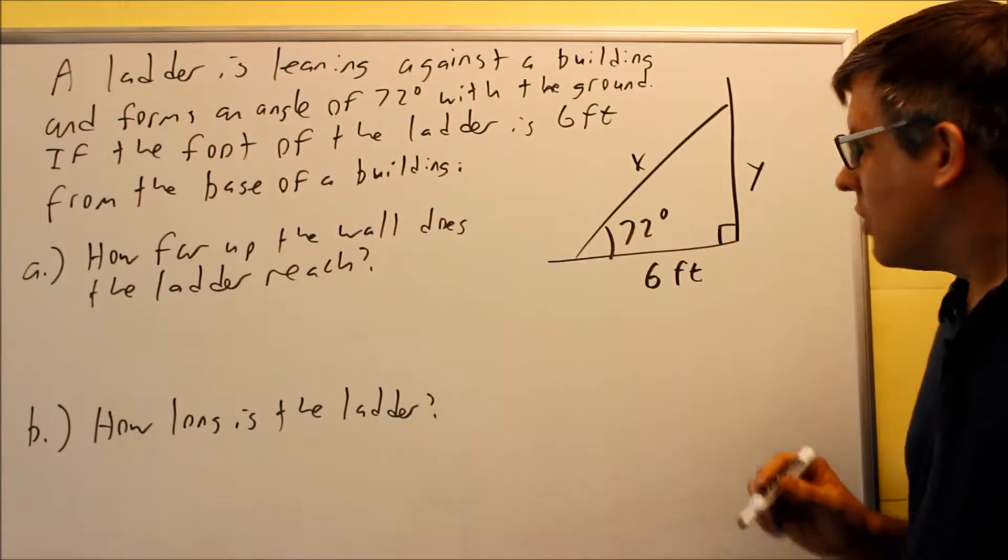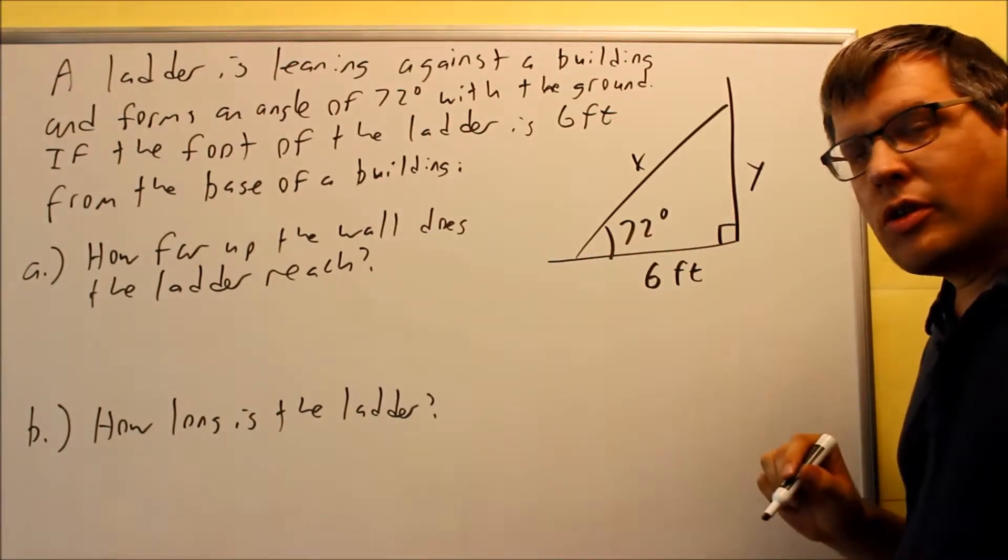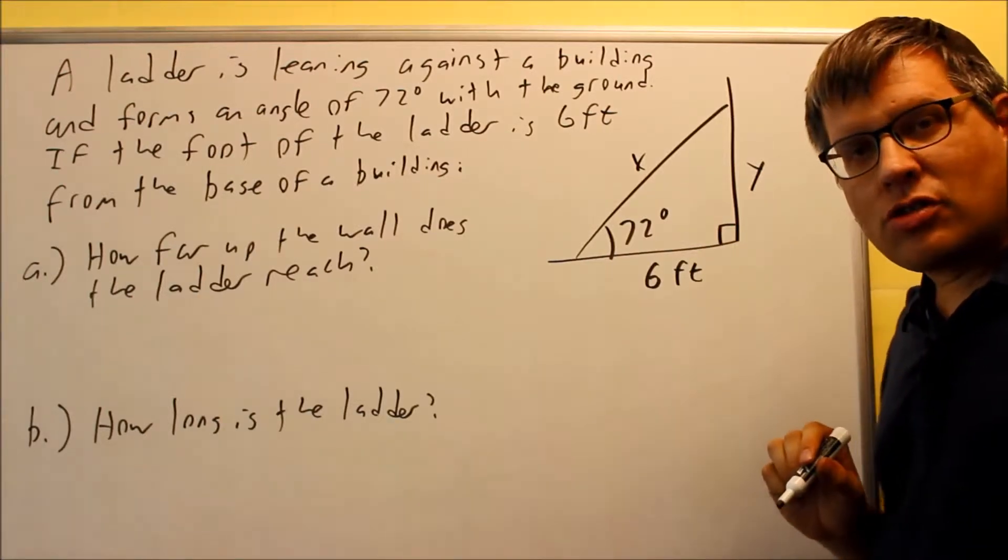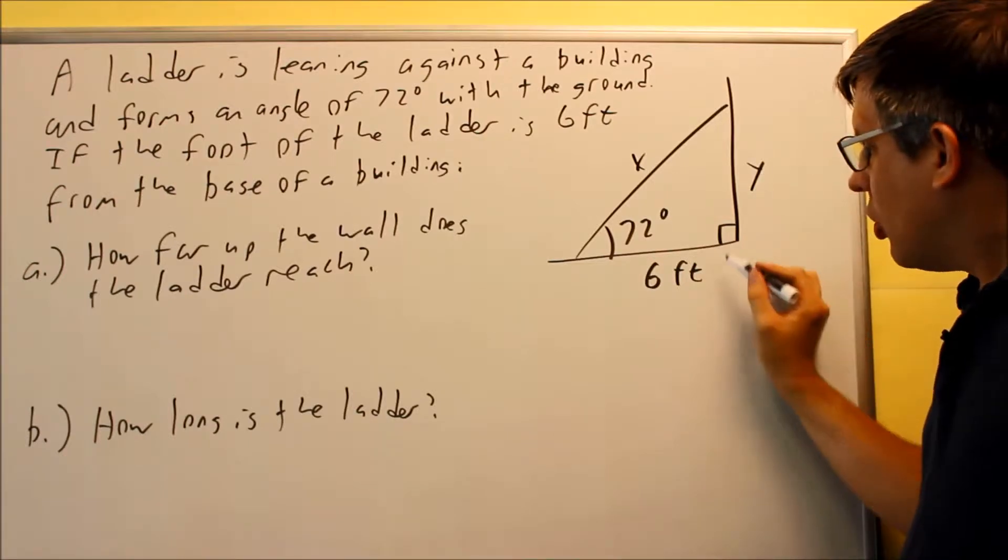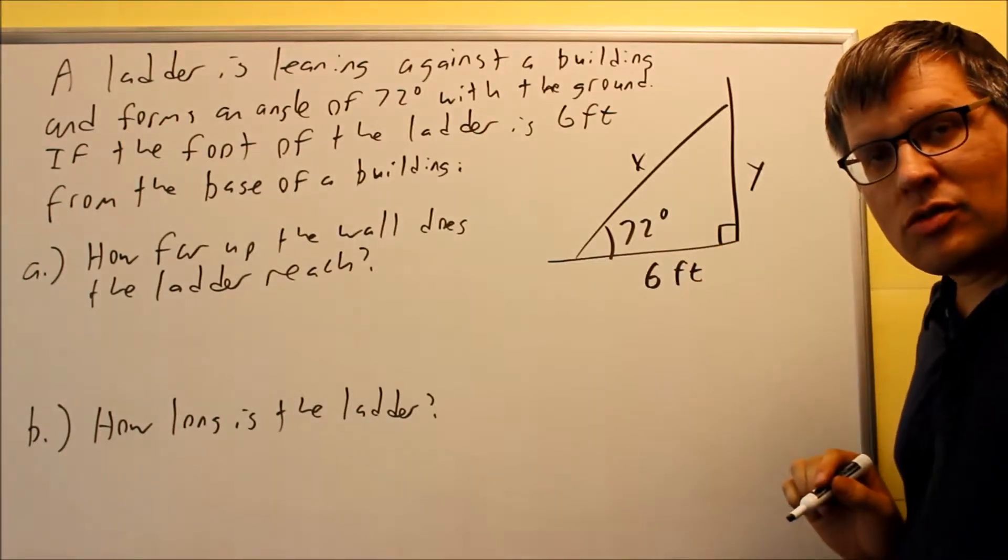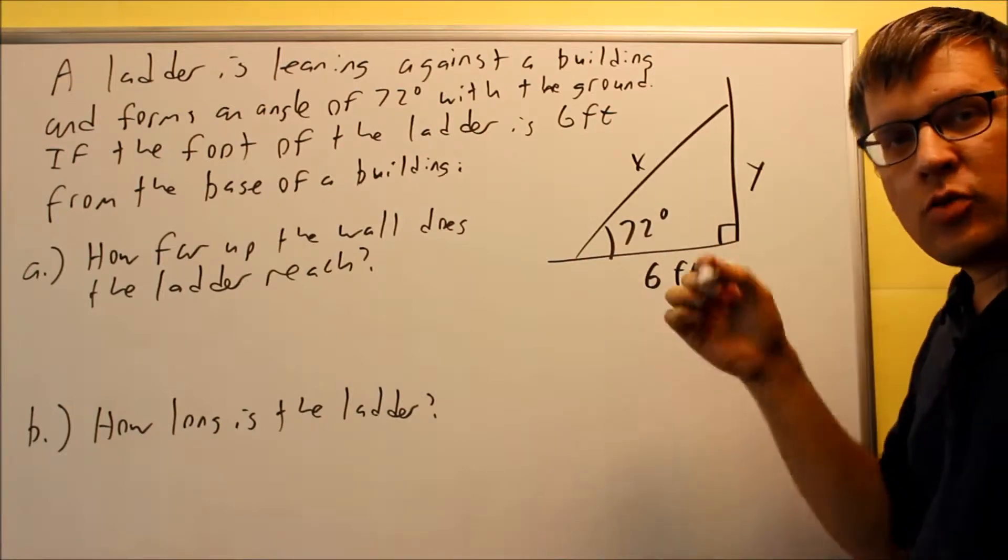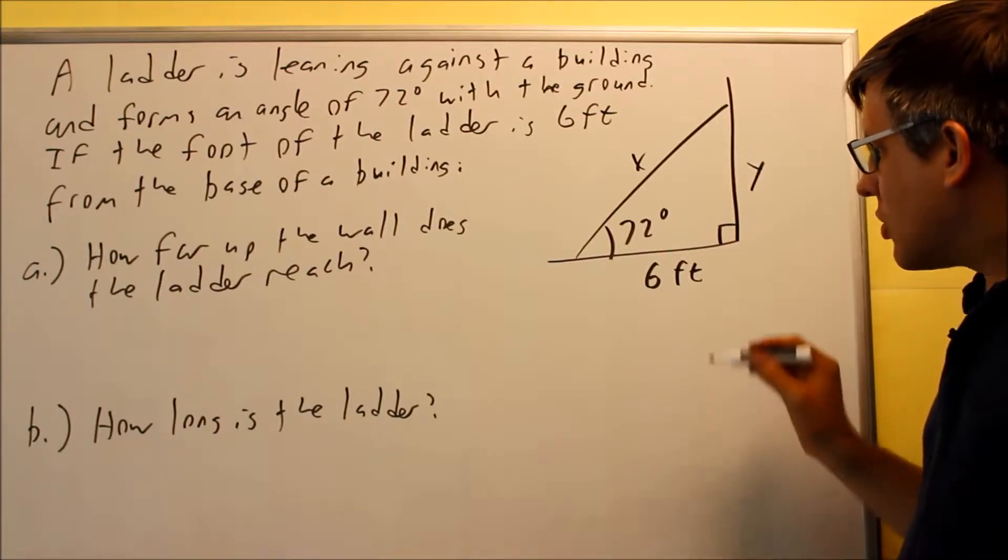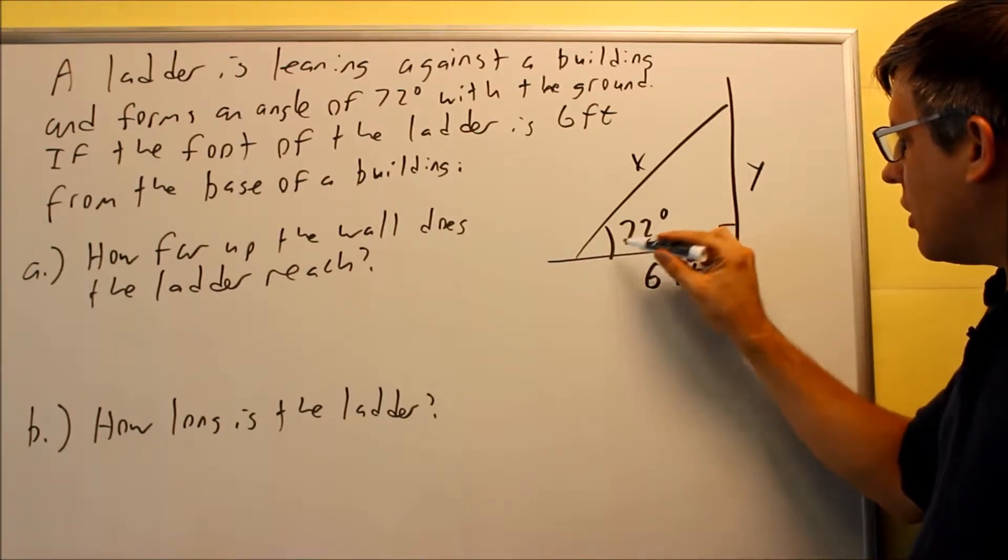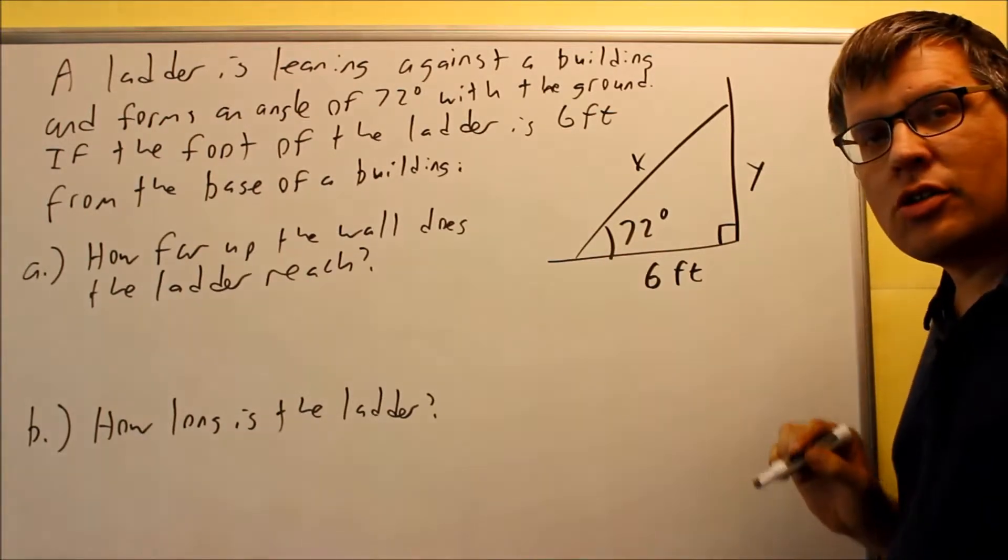Let's do part A first. I want to solve for Y. So as we've talked about before, what you want to do is you want to pick a trig definition that relates the side you're trying to find, which is our Y, with the side that's already given to us. So we don't want to do one that involves X and Y because we don't have enough information. We have to have one that at least involves one of the sides that's given.